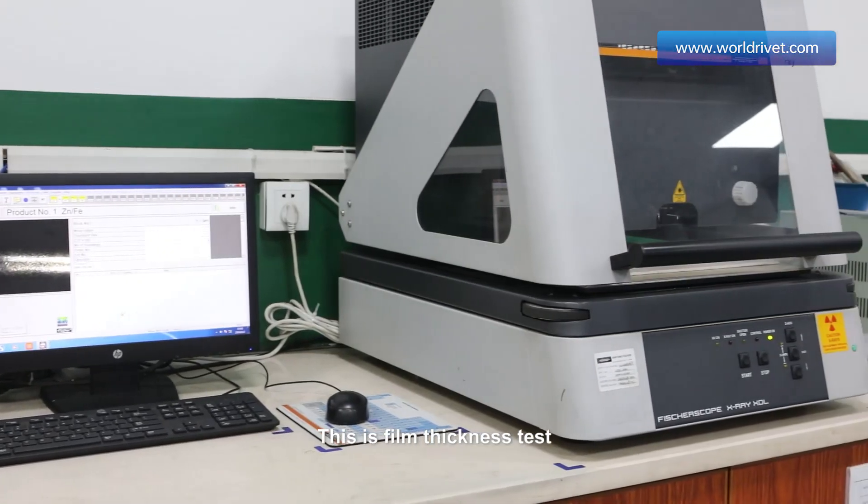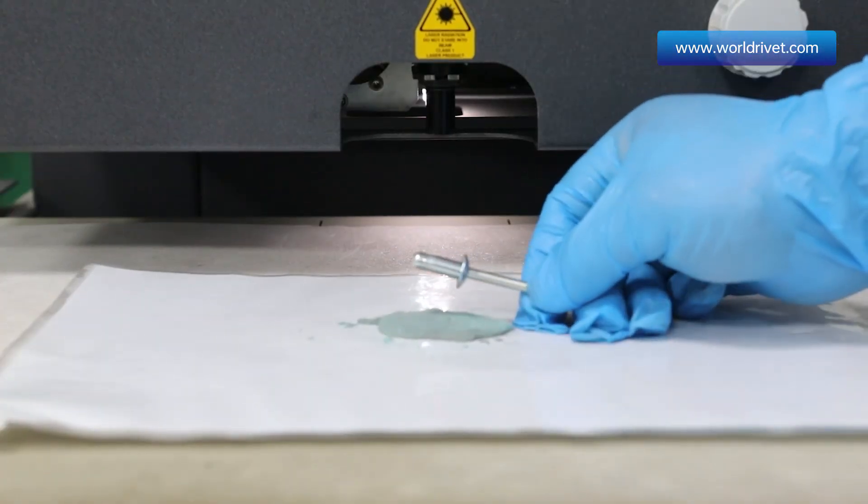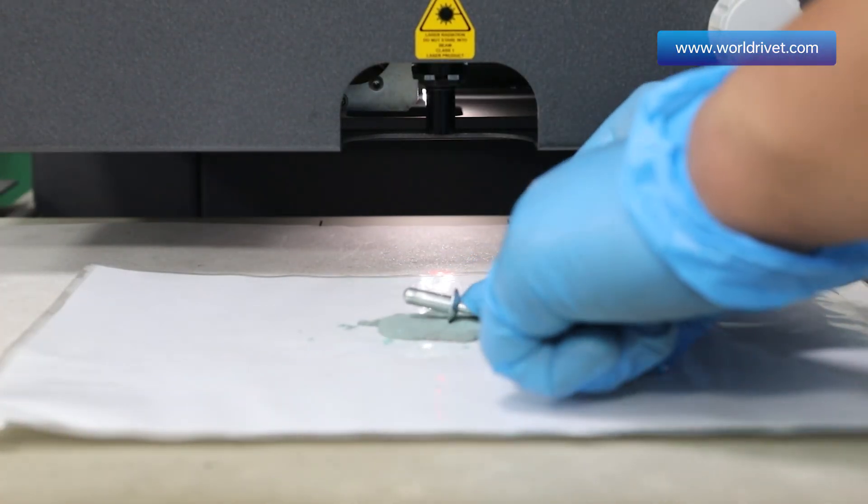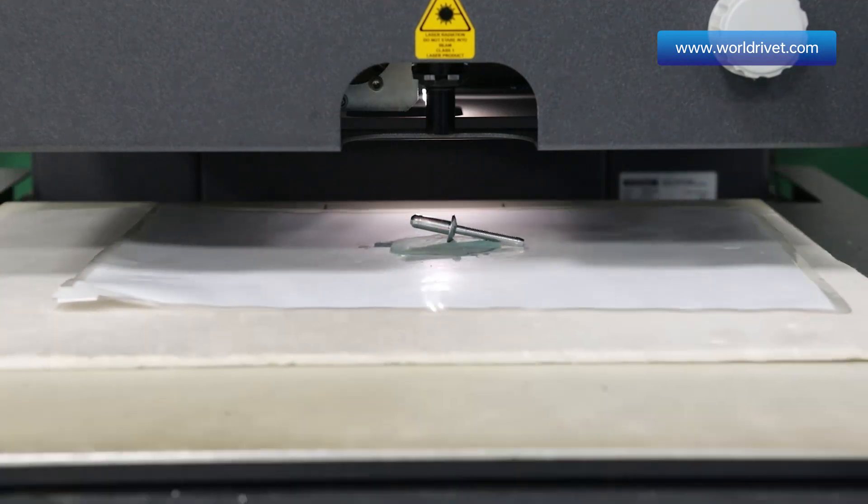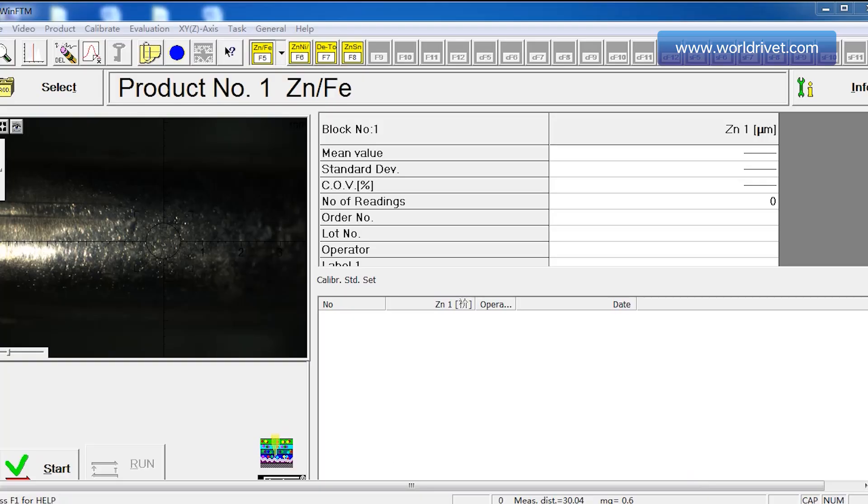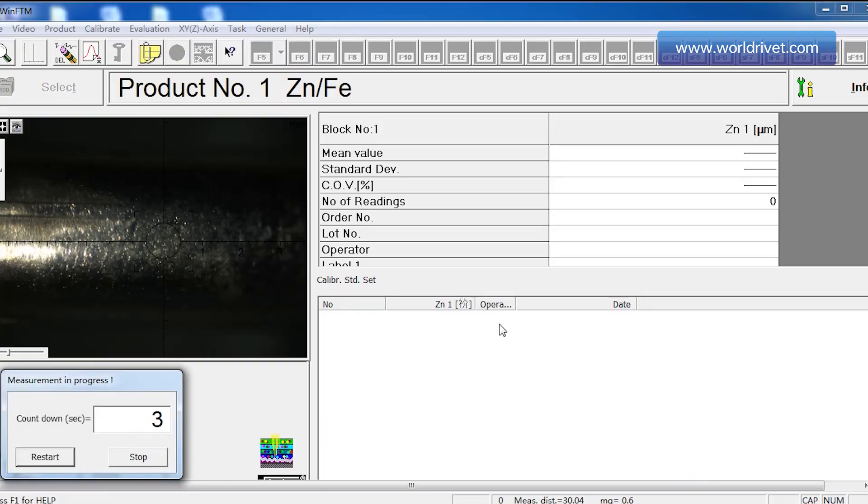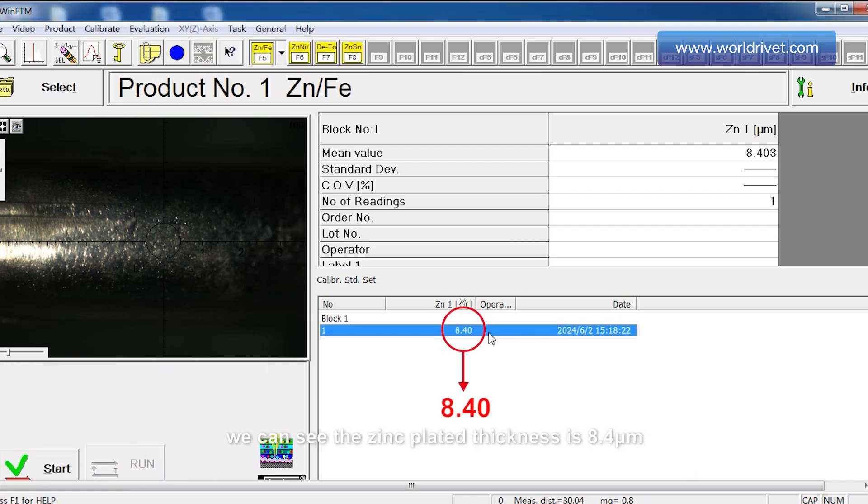This is film thickness test. We put the rivet into machine. We can see the zinc plated thickness is 8.4 micrometers.